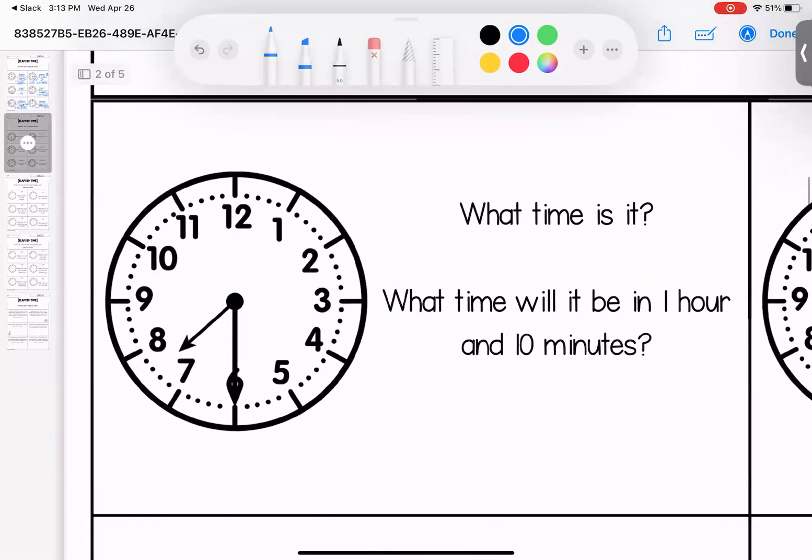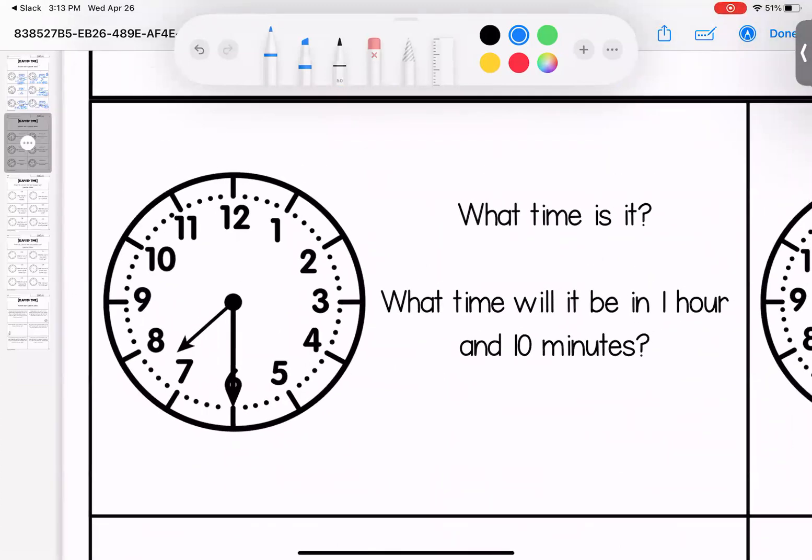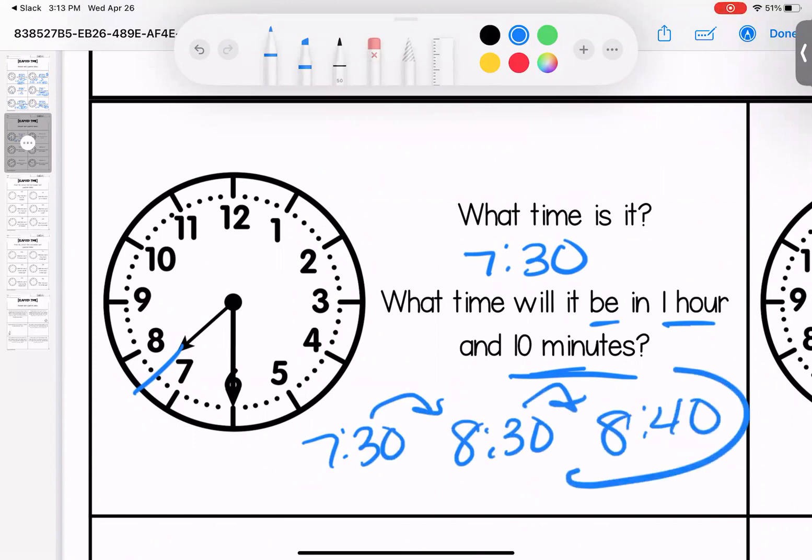All right, same premise. What time is it and answer the question. It is 7:30. What time will it be in one hour and 10 minutes? So we're adding 7:30 plus one hour is 8:30 plus 10 minutes is 8:40.